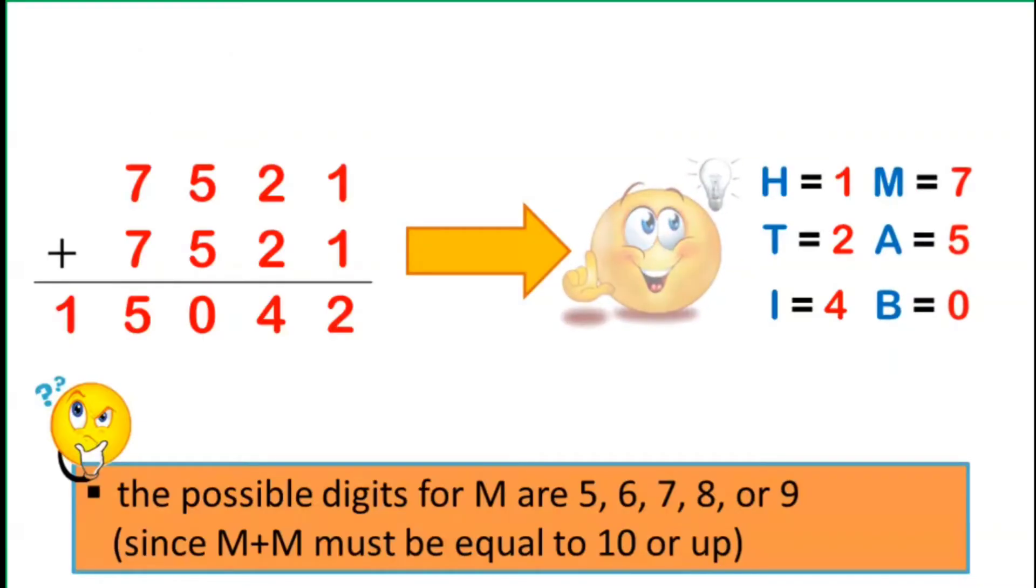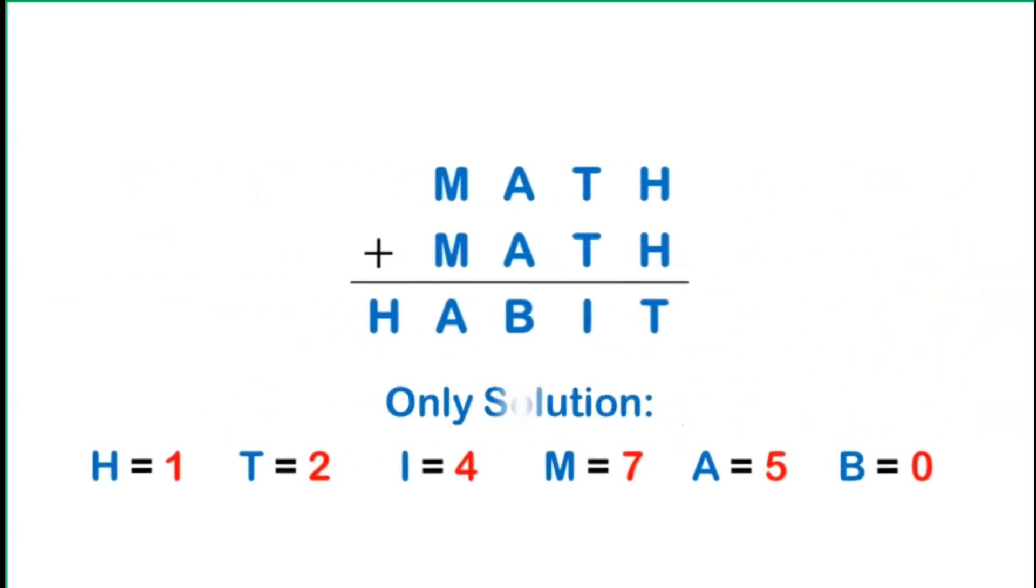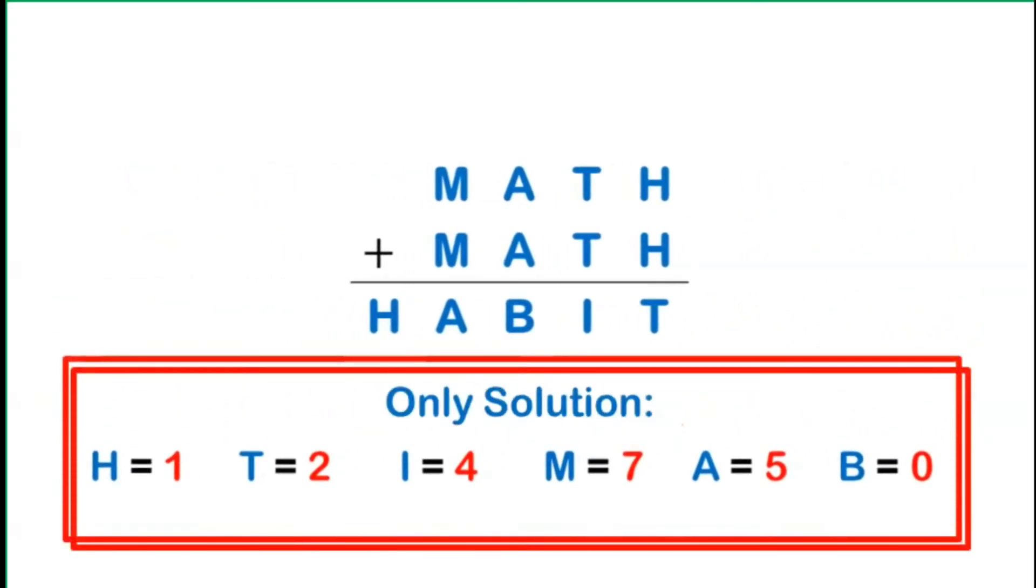To be sure that this is the only possible solution to the problem, we can actually continue with the assumption that there is no carry over and we will fail. The same is true if we suppose that the letter M is equal to either 6 or 5. Hence, the only solution to the given alphametic is H equals 1, T equals 2, I equals 4, M equals 7, A equals 5, and B equals 0.